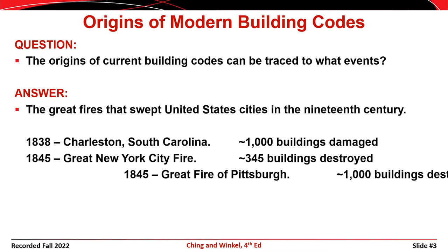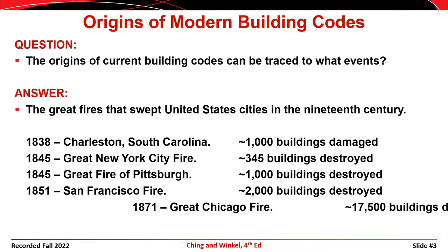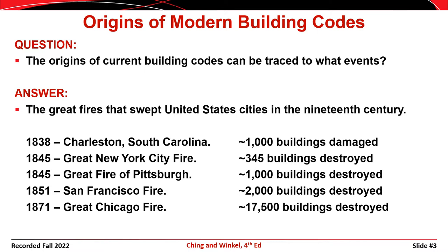Between 1838 and 1871, there were five great fires in Charleston, New York City, Pittsburgh, San Francisco, and Chicago. The Chicago Fire was by far the most devastating, and it was this event that most directly led to the development of building codes.